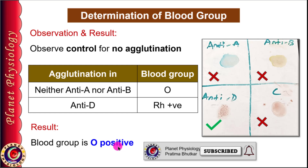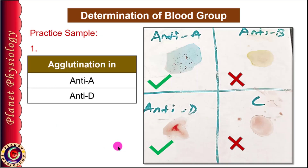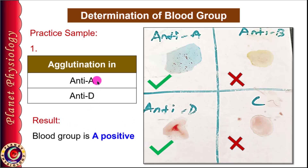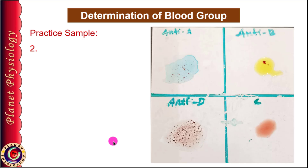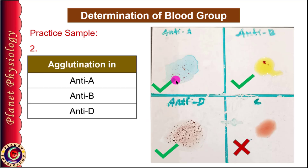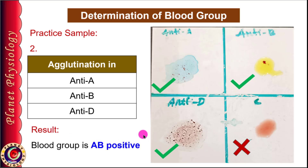Let's study a few more samples for practice. In practice sample number 1, you can observe agglutination in anti-A and anti-D but not in anti-B. This indicates that RBCs have agglutinogen A and D, hence the blood group is A positive. In the second sample, agglutination is present in anti-A, anti-B, as well as anti-D — it means RBCs have agglutinogen A, B, and D, and hence this blood group is AB positive.